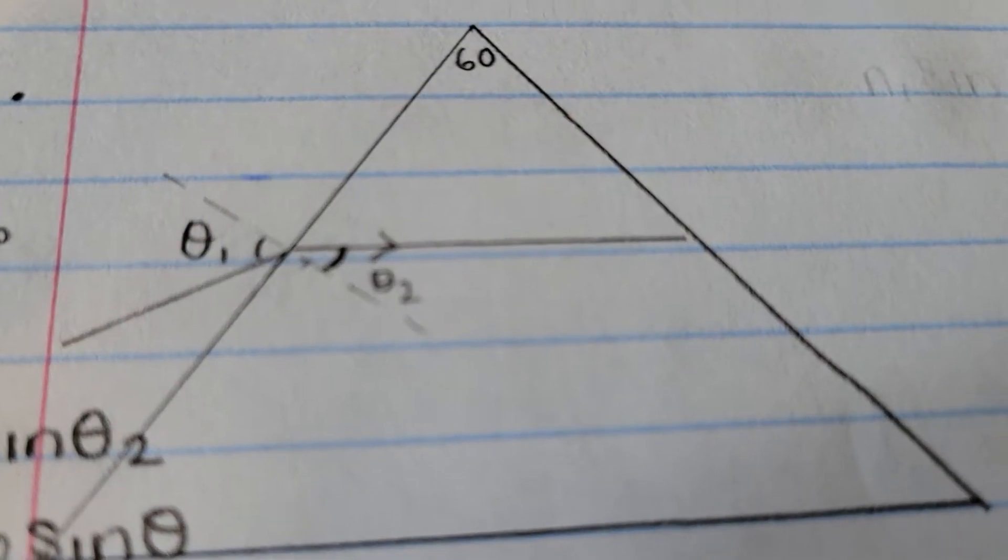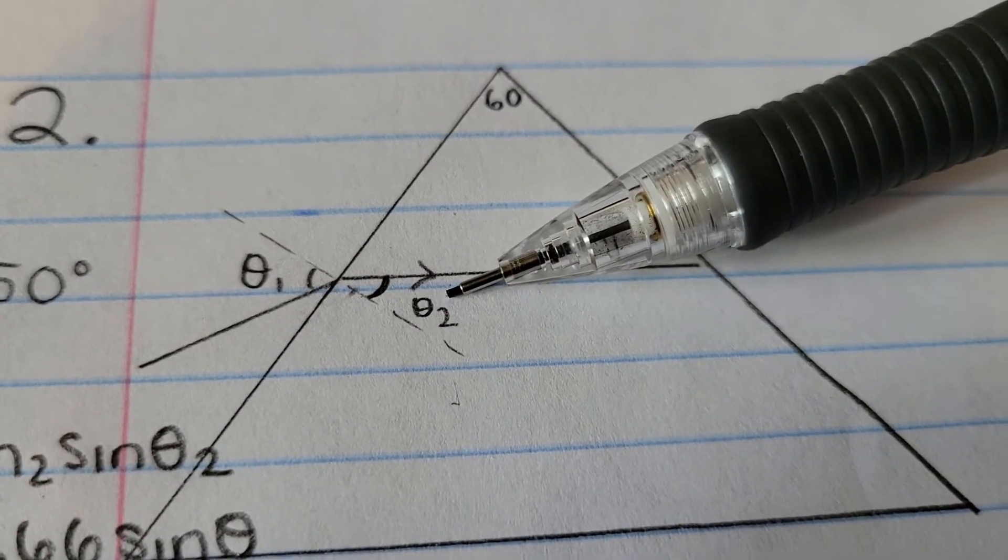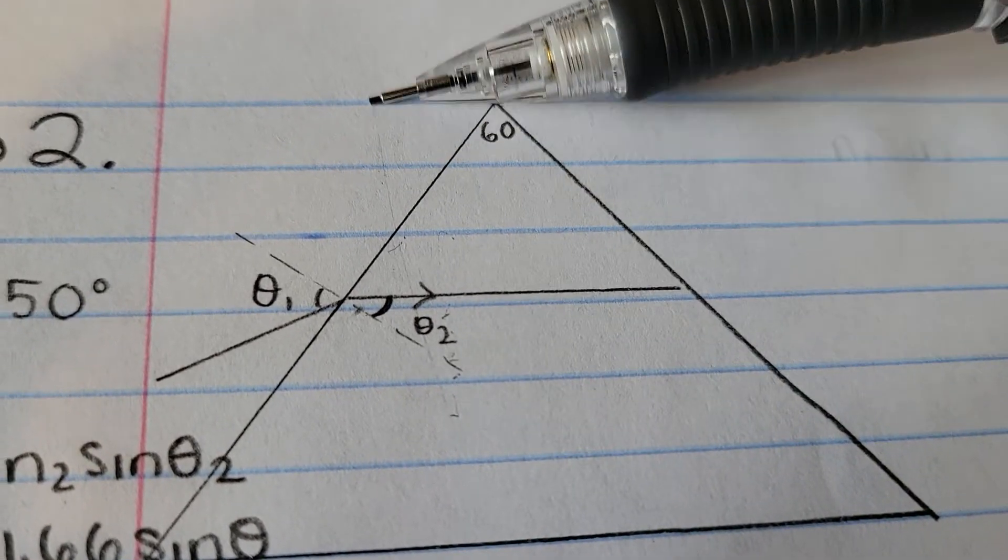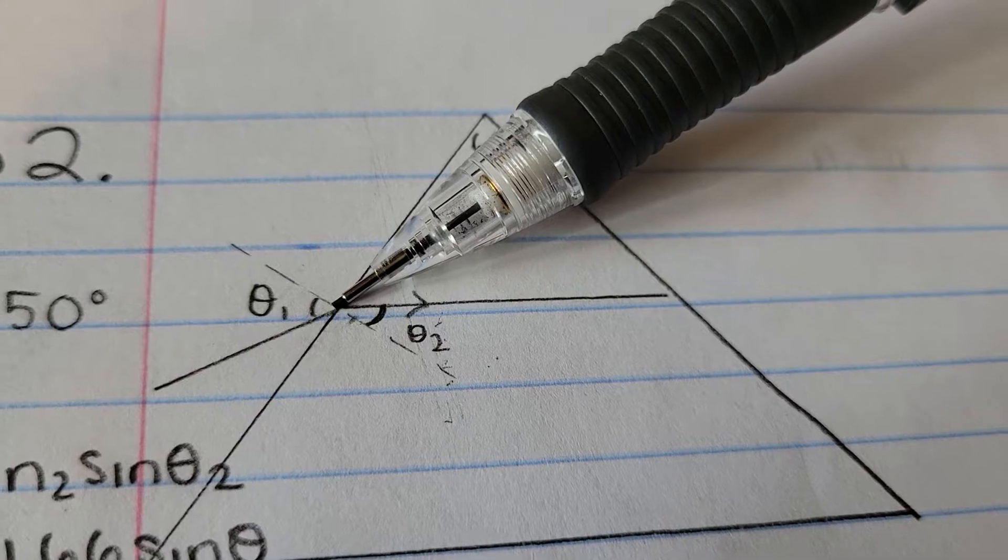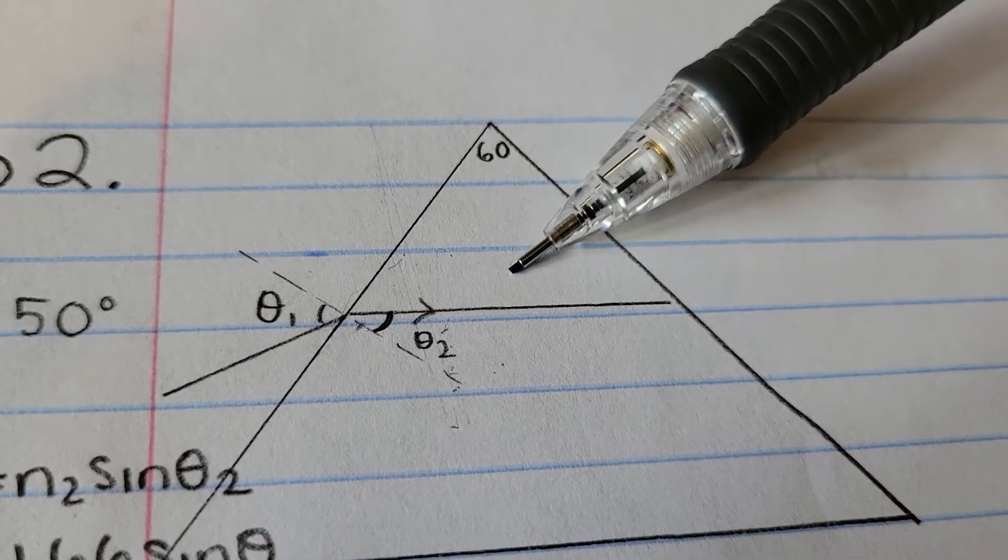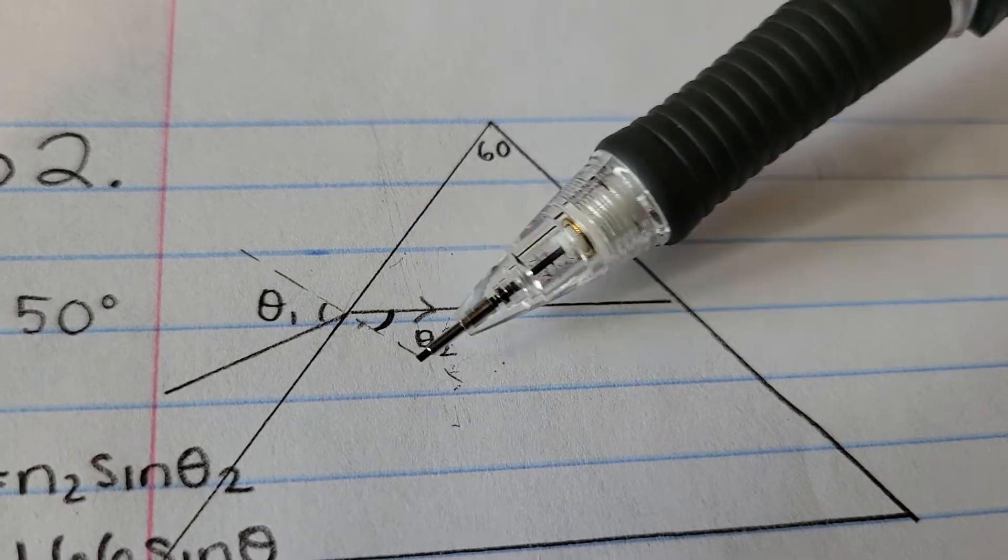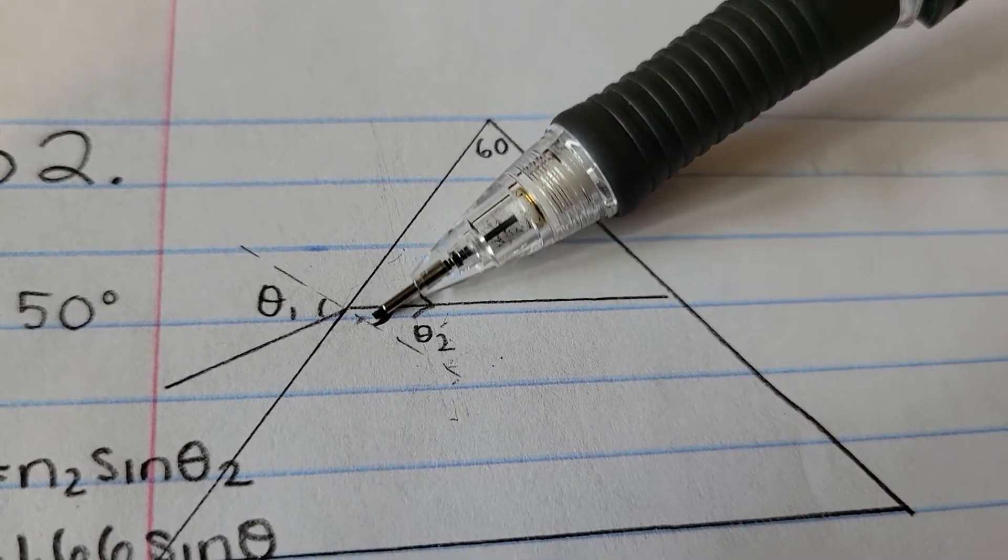Now, since theta 2 comes out to be 27.48, this will be the angle here. We can draw another normal line, and if we draw a normal line, we know that these two equal 90 because this is a right triangle.